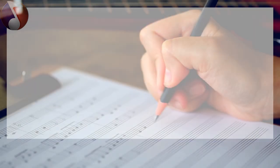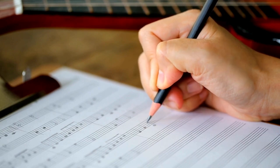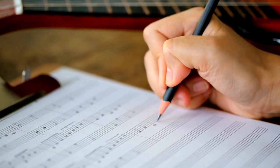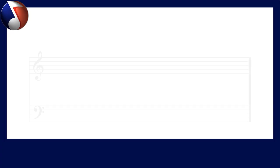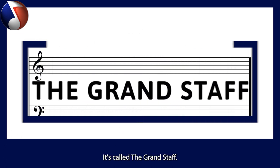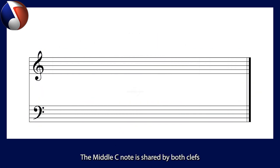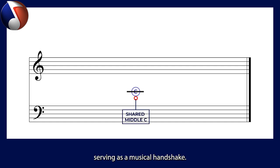Practice makes perfect, so spend some time reading and writing notes on the bass clef ledger lines. When both the treble and bass clefs appear together, it's called the grand staff. The middle C note is shared by both clefs, serving as a musical handshake.